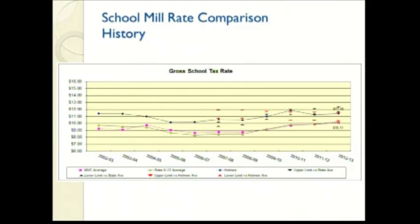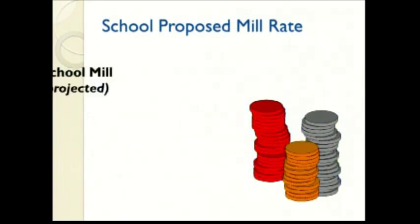I do remain hopeful that the $11.79 will come in a little bit lower. But there are many projections involved — equalized valuation of the communities and the third Friday count in student enrollment are a couple of the major variables still in play. Any questions on the school tax or mill rate that we're projecting?